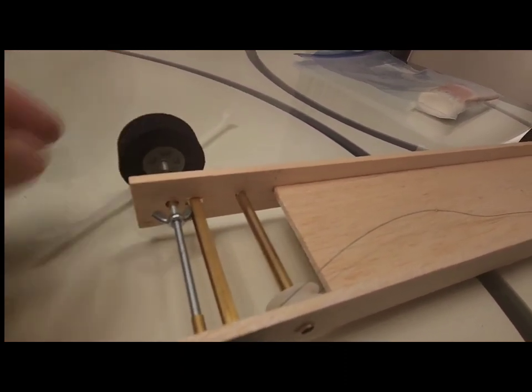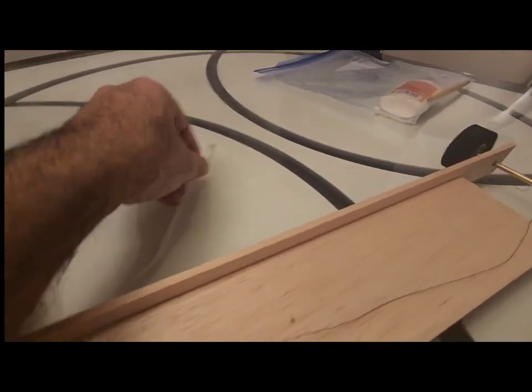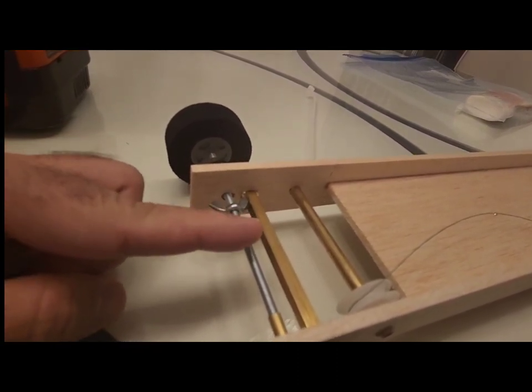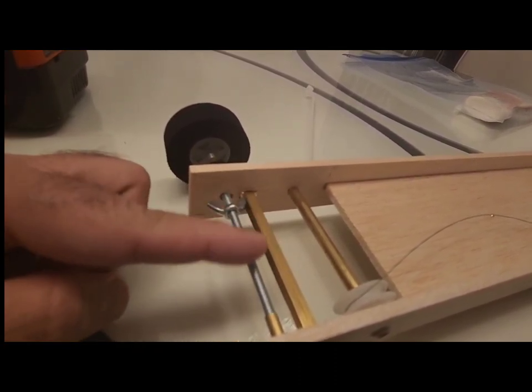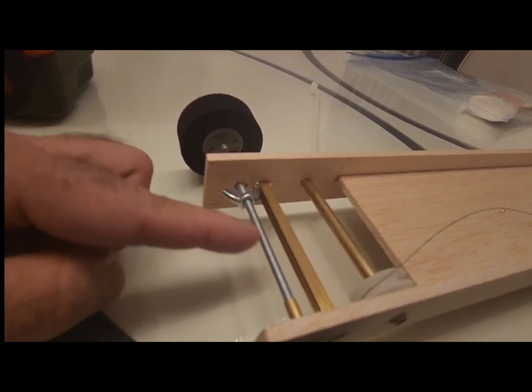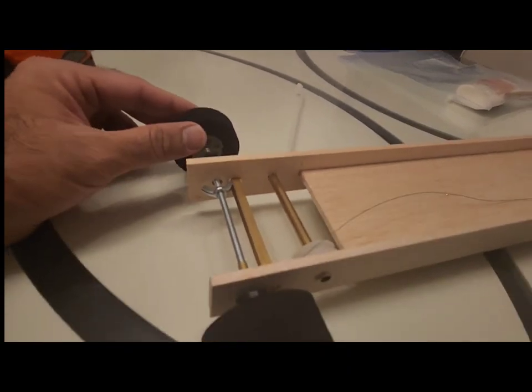When you turn the wheels, this wing nut rides through this into this track using the track bar. It glides over using the thread, moves in this direction and vice versa.